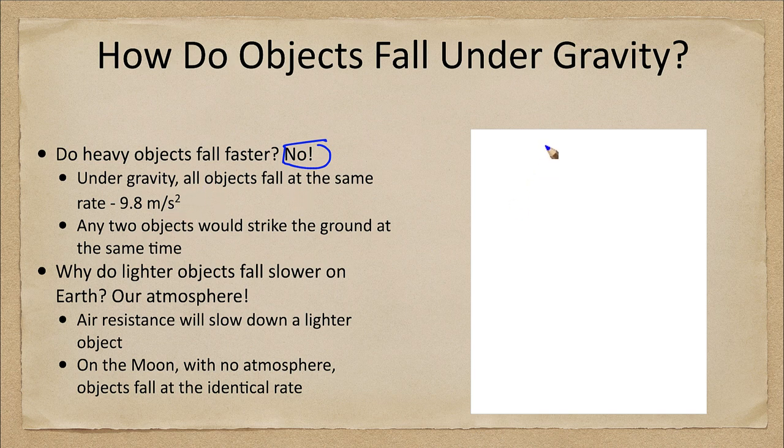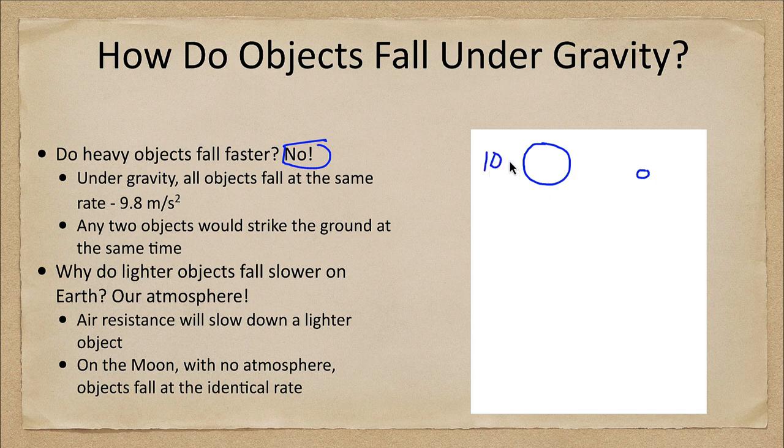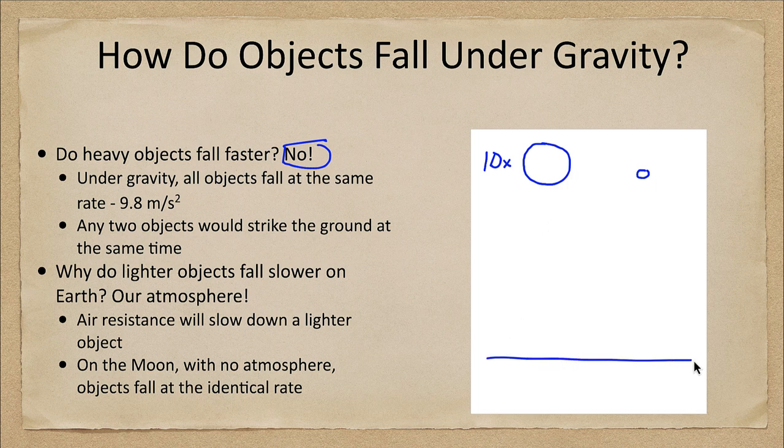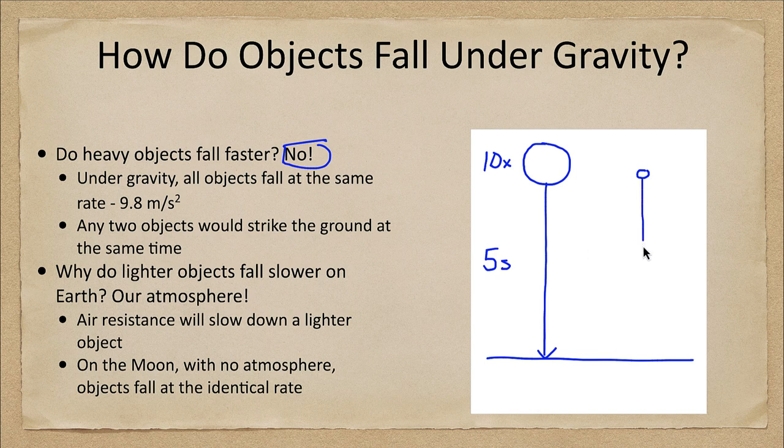It doesn't matter if you have a very large object here and a very small object. Let's say this is a large mass, 10 times the mass of the smaller one. They would still fall and strike the ground at exactly the same time. If this took say five seconds to hit the ground, then this one is going to hit the ground in five seconds as well. It does not matter what their mass is.